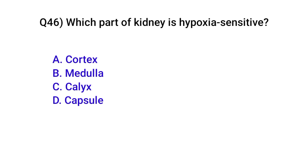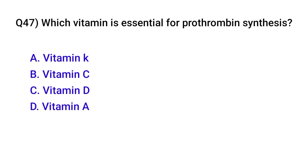Question number forty-six: Which part of the kidney is hypoxia sensitive? Correct option is B: Medulla. Question number forty-seven: Which vitamin is essential for prothrombin synthesis? Correct option is A: Vitamin K.